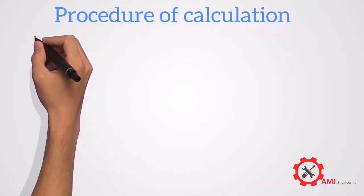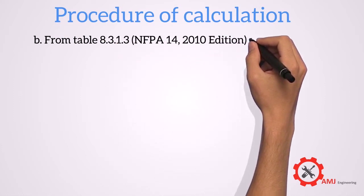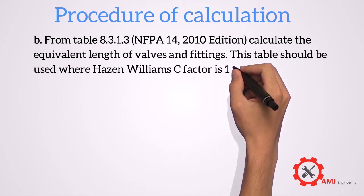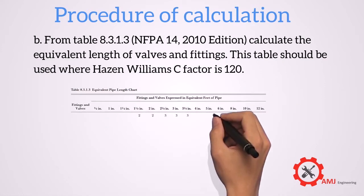From table 8.3.1.3 from NFPA 14, we can calculate the equivalent length of valves and fittings. This table should be used where Hazen-Williams C factor is 120.